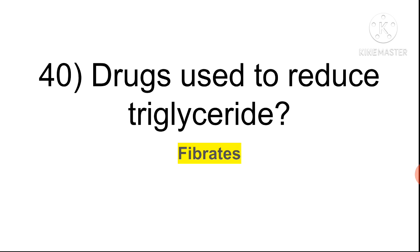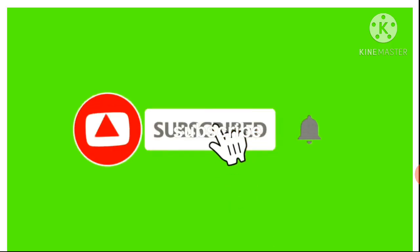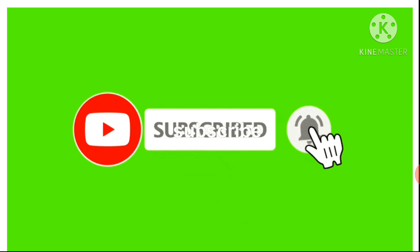Question forty: drugs used to reduce triglycerides (TGs/TAGs) are fibrates. Question forty-one: in a known case of thalassemia presenting with iron overload, the drug of choice is desferoxamine. This concludes lecture one on pharmacology. Further lectures on pharmacology will be uploaded — stay connected, thank you.